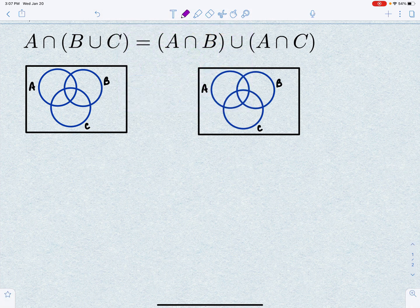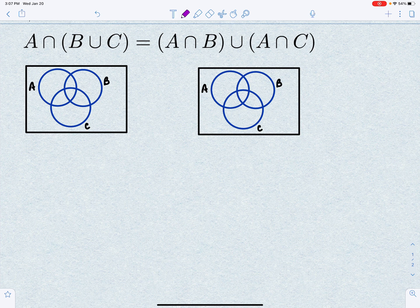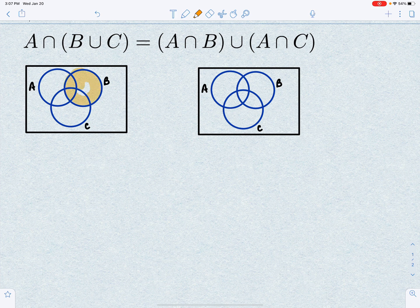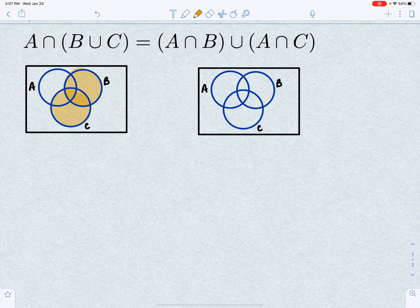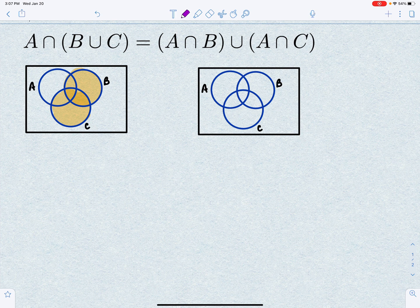So on the left, we're going to shade A intersect B union C. So picture the area where B union C is, and that's anything inside the circles B or C. And now intersect that with A. So this is the only piece that intersects with A.